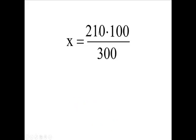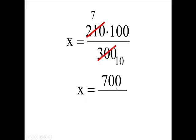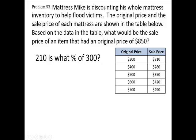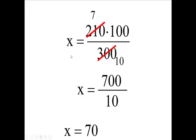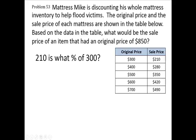So, X is $210 times 100 divided by $300. I'm going to reduce these by 30 — this one and this one. 30 goes into each of those numbers. 30 goes into $210 seven times. 30 into 300 goes 10 times. Now I have 7 times 100 over 10. So X is going to be 700 — 7 times 100 — divided by 10. We're looking at X being 70 percent. It's 70%, so we're going to put 70 right here.